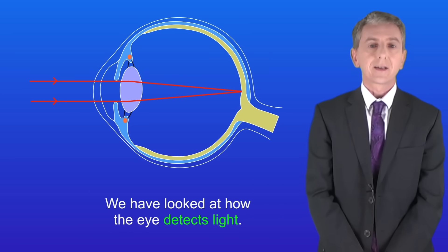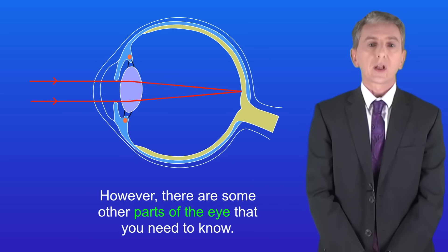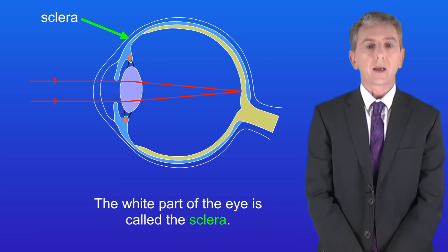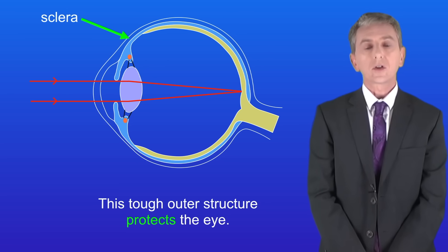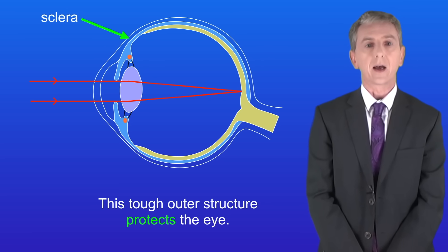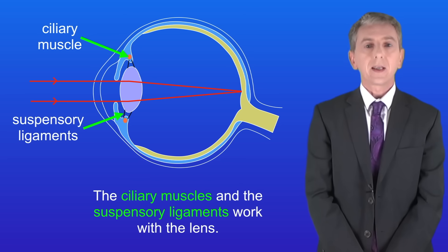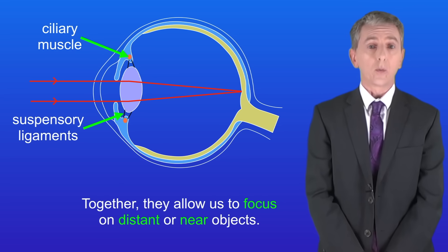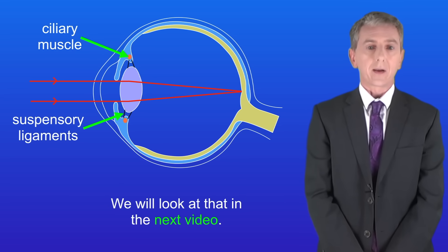Okay so we've looked at how the eye detects light. However there are some other parts of the eye that you need to know. Firstly the white part of the eye is called the sclera. This tough outer structure protects the eye. The ciliary muscles and the suspensory ligaments work with the lens. Together they allow us to focus on distant or near objects and again we look at that in the next video.